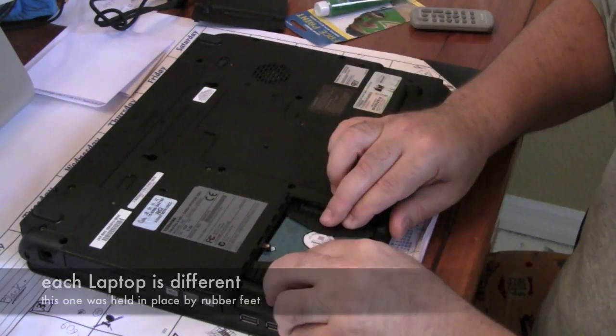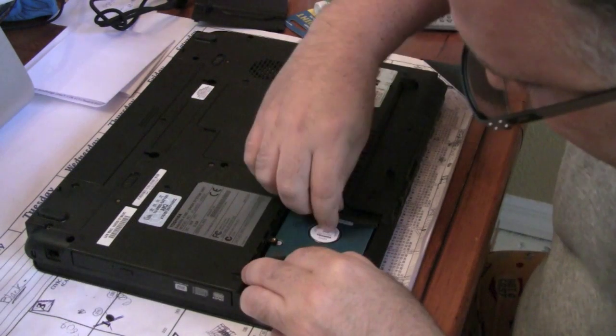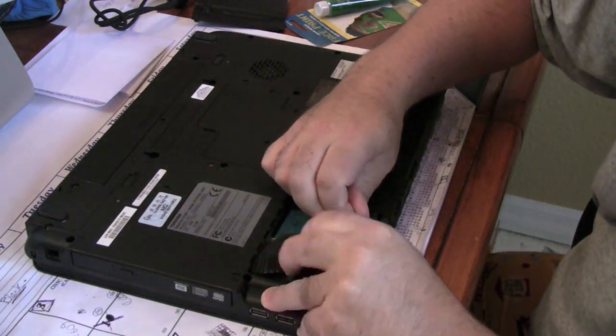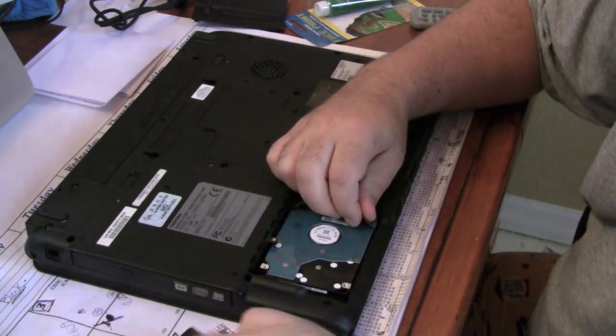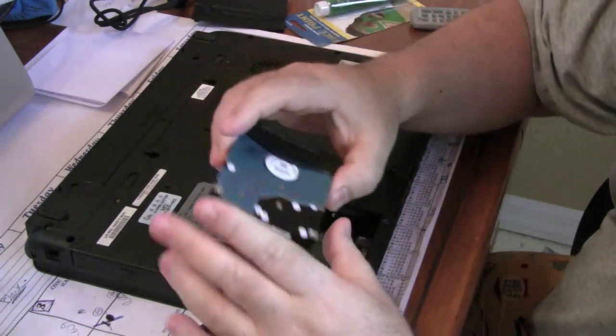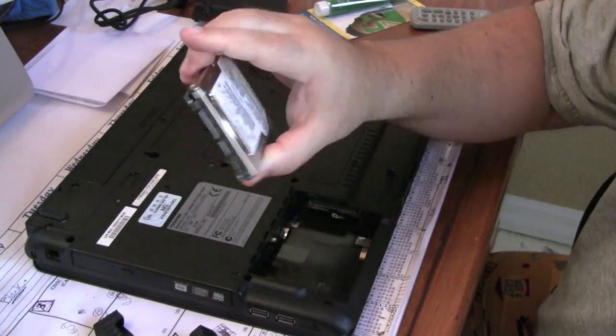And there's the drive. So depending on the situation, this one looks a little bit unique. I've never quite seen anything like that before. Okay, and it's out. So this is the drive with some little rubber things on it.